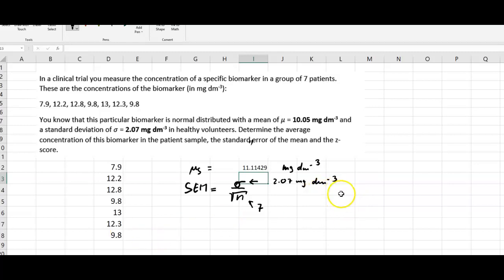We can calculate that. So equals 2.07 divided by the square root of seven, and that would give us our standard error of the mean. The units would be milligrams per cubic decimeter.